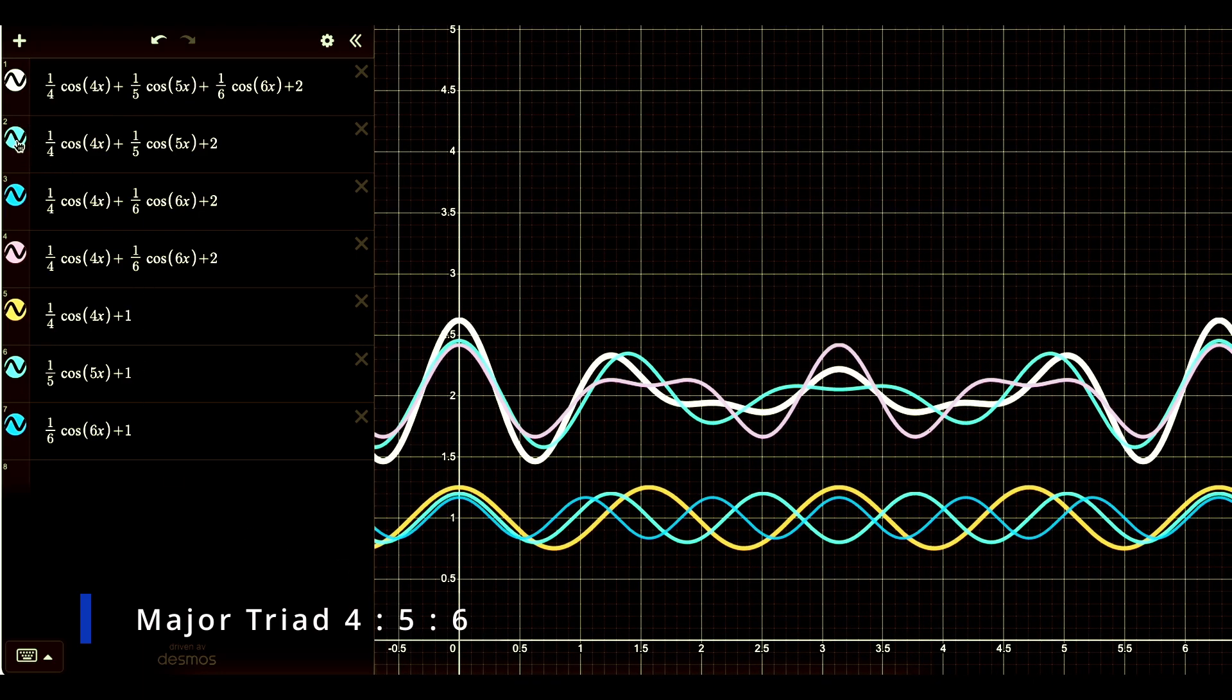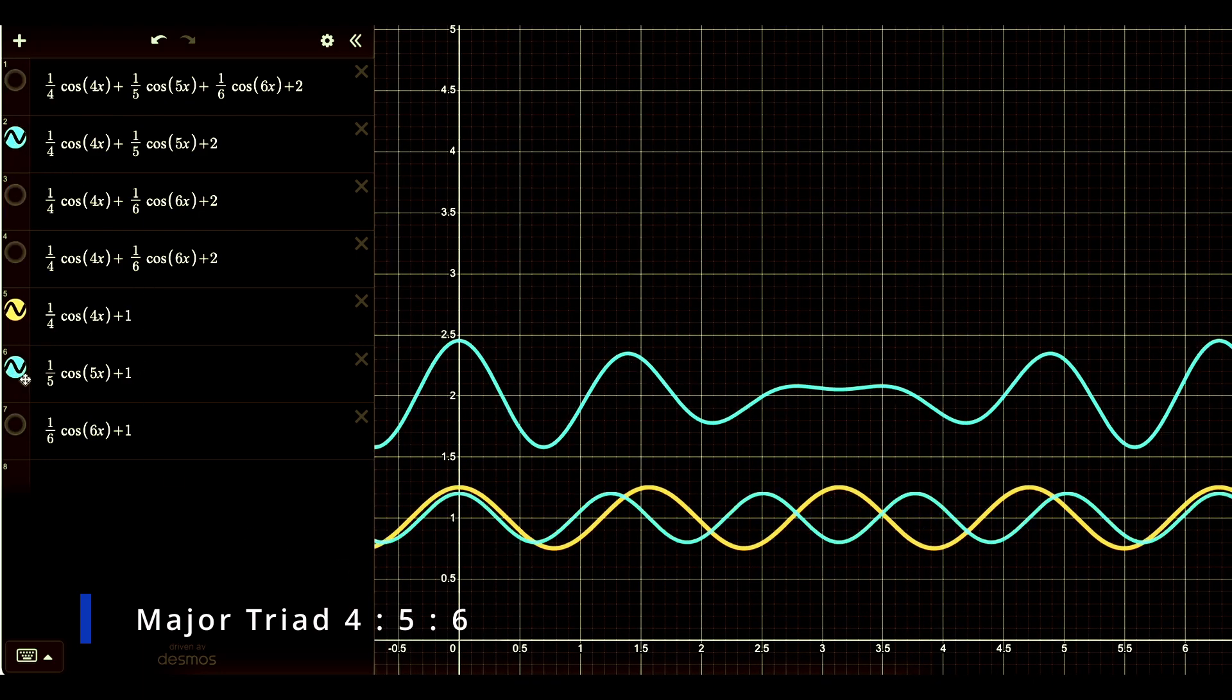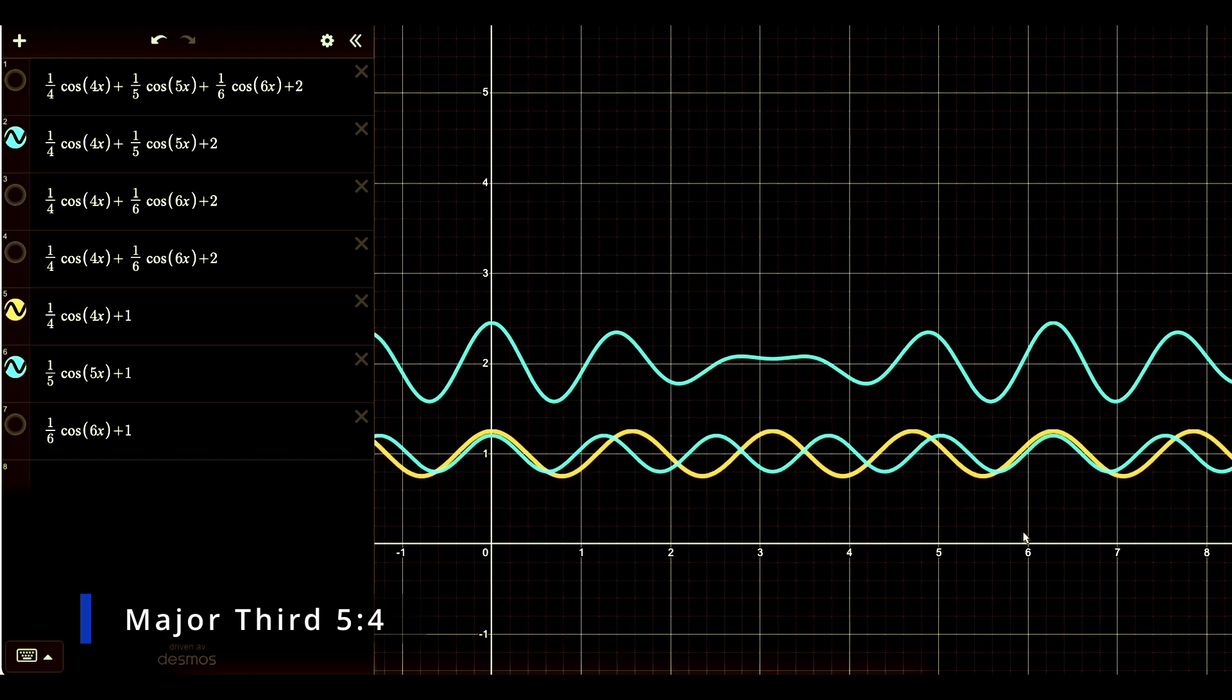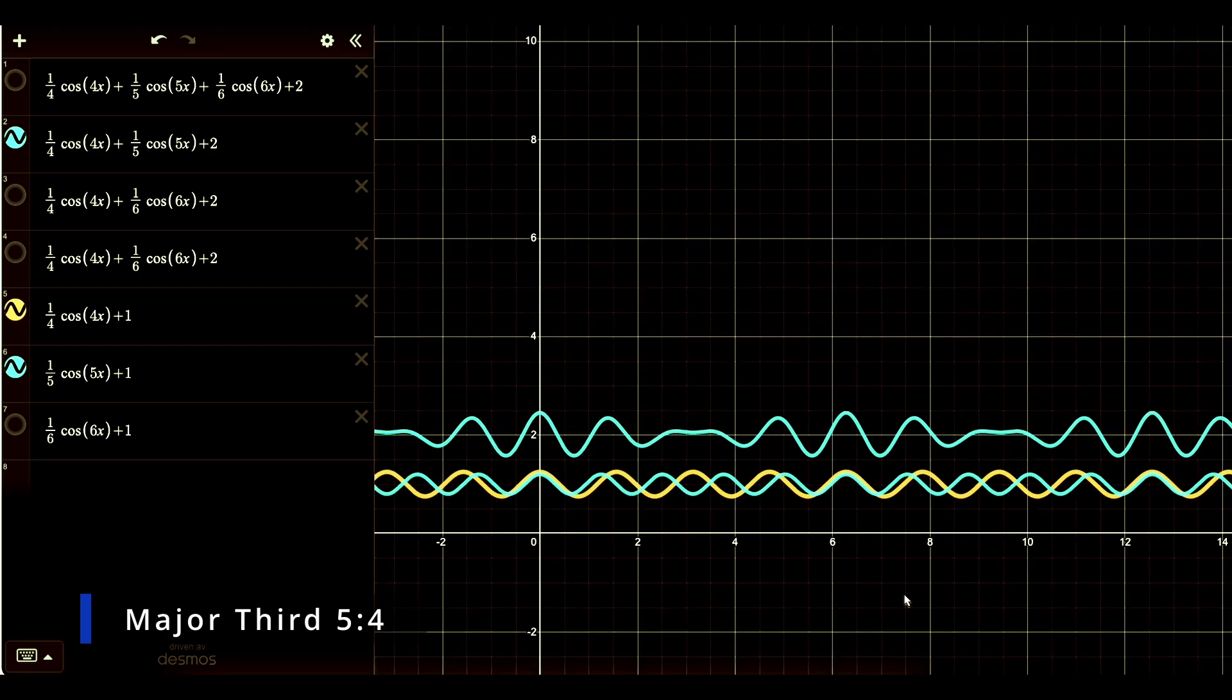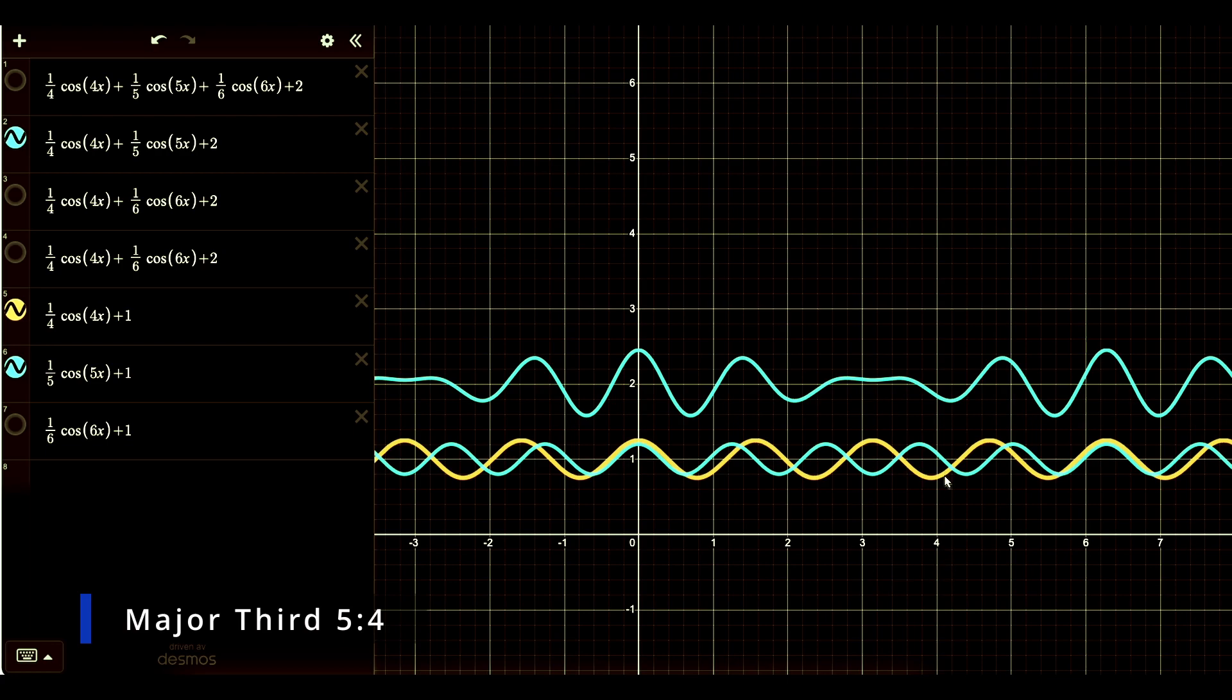And we can see by starting with the interval of a major third. That is the four to five. This is the interval structure. And its Fourier transform.